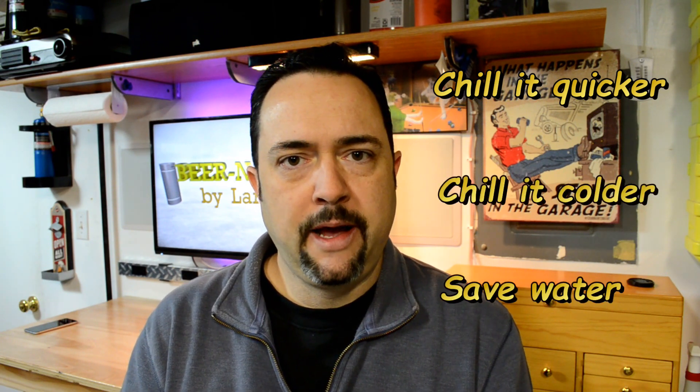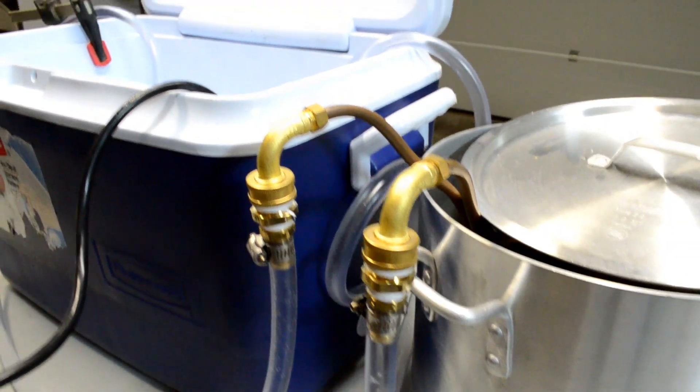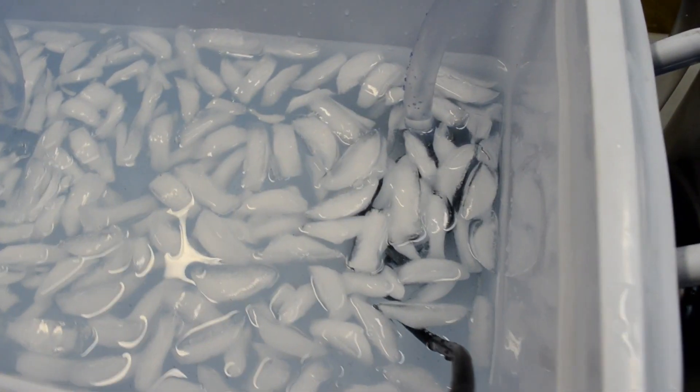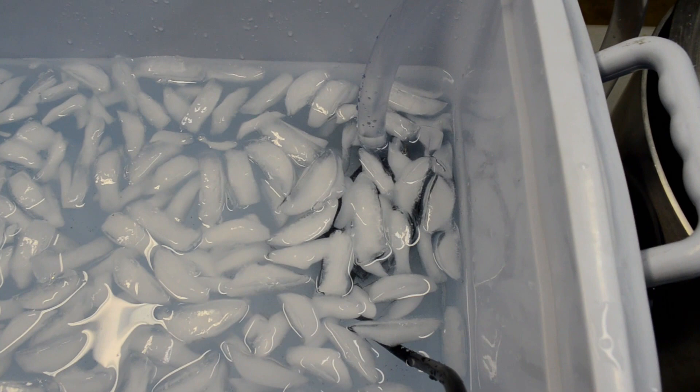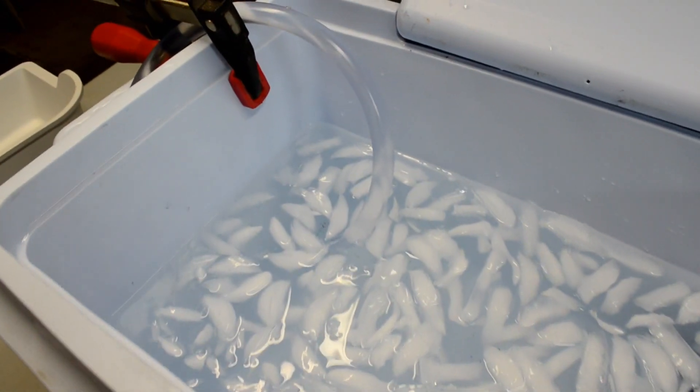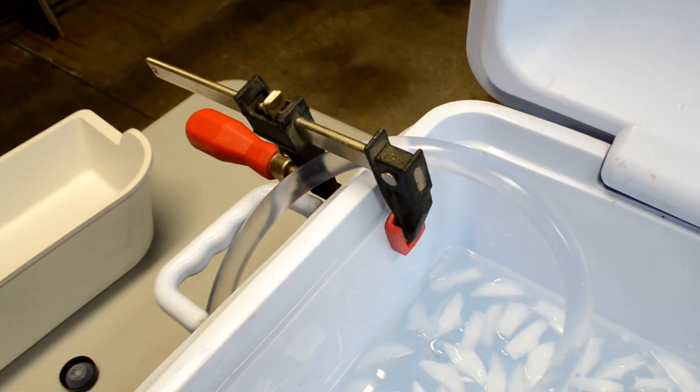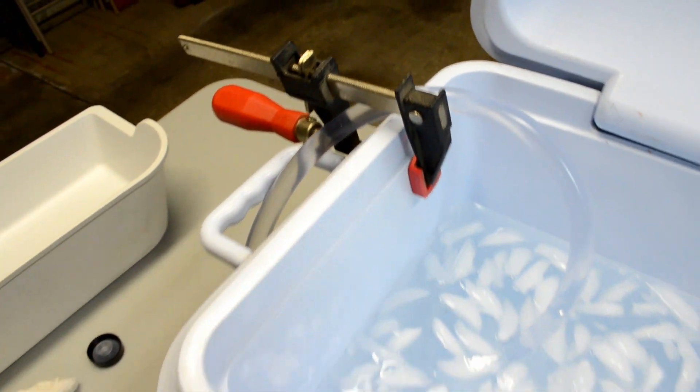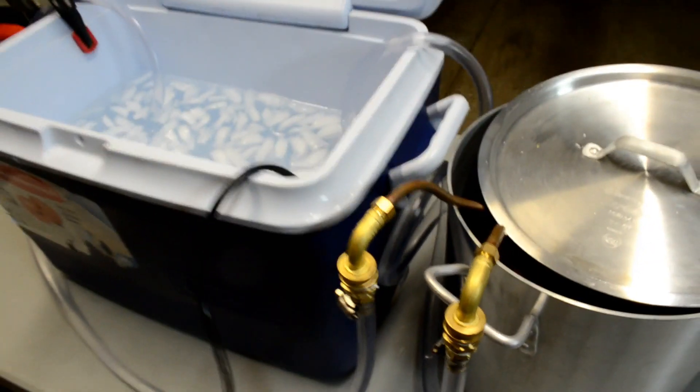And what I found online is a recirculating wort chiller idea where you actually take a submersible pump and an ice water bath and you turn it on and you actually chill the water down to a much colder temperature, send it through the wort chiller and then it comes out and right back into the same bucket or cooler that you were using anyway. So it just recirculates the water over and over again. So that's going to save a lot of water. The downside is that you need ice to keep it chilled. So that's the trade off. But if you'd like to see how I do this, keep watching.